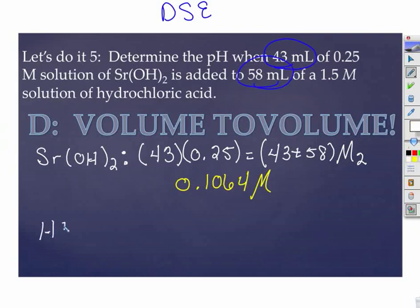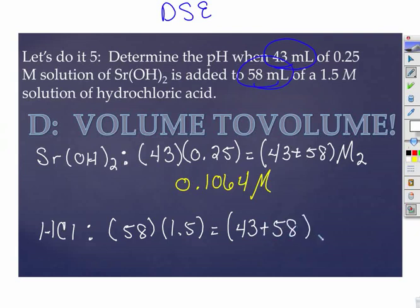Now we're going to do the same thing with our HCl. Our HCl initial was 58. Its molarity initial was 1.5. My total is 58, 53 plus, sorry, 43 plus 58 because we added the two solutions together. So remember, DOC saves everyone. So the DOC, the dilution is done.